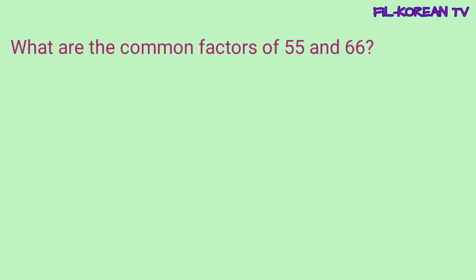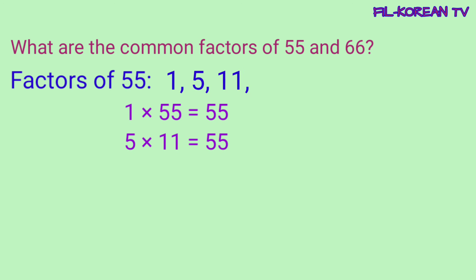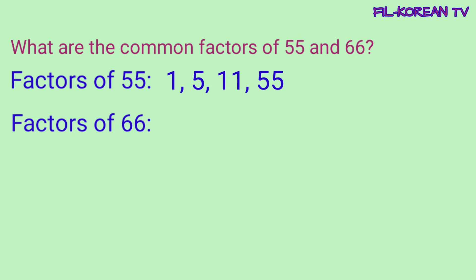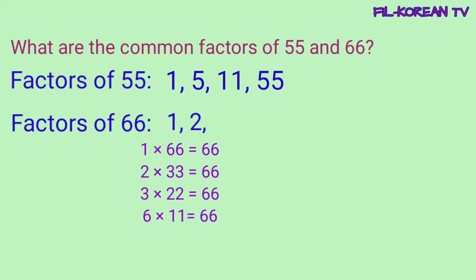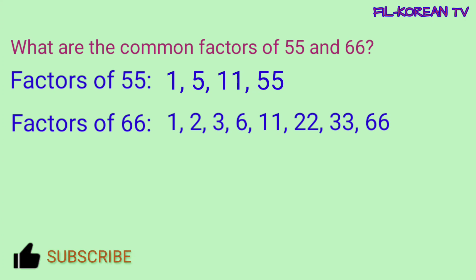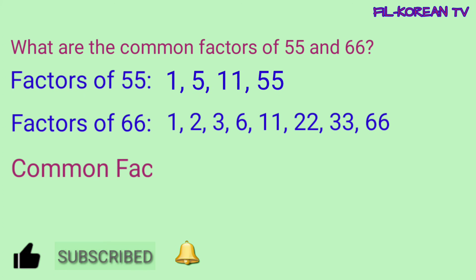Another question: What are the common factors of 55 and 66? Kunin natin yung factors ng 55 — ang 55 ay divisible by 1, then divisible by 5, 11, at 55. Ito yung factors ng 55. Ngayon, kunin naman natin yung factors ng 66. Ang mga factors ng 66 ay 1, 2, 3, 6, 11, 22, 33, and 66. Ang common factors ng 55 at 66 ay 1 at 11.